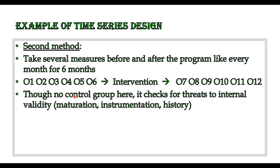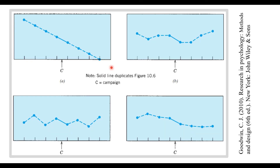Since there is no control group, only one group is involved. But because we are taking different measurements at different series points, this helps us reduce the threat to internal validity arising from maturation, instrumentation, or history. Let us look at four possible graphs obtained from this experiment.